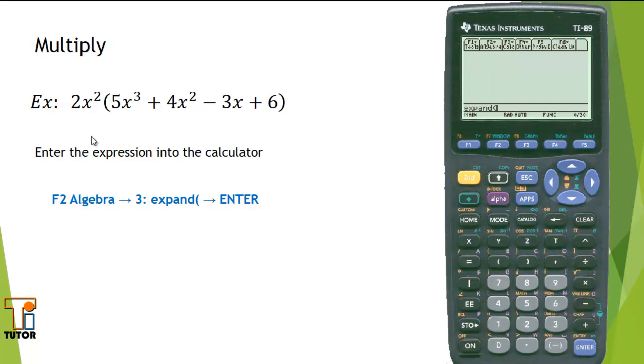And now I'll enter in the expression 2x². I'll enter it exactly as I see it, so I'm going to put in a begin parenthesis: 5x³ plus 4x² minus 3x plus 6.